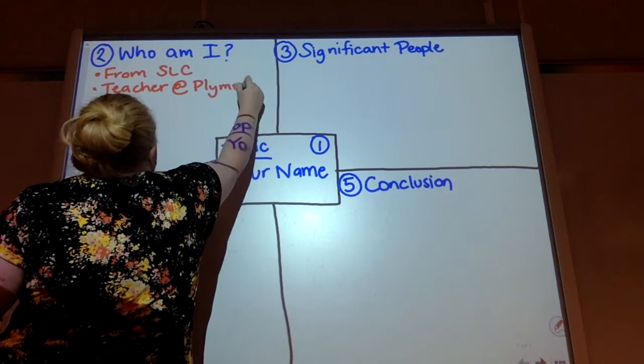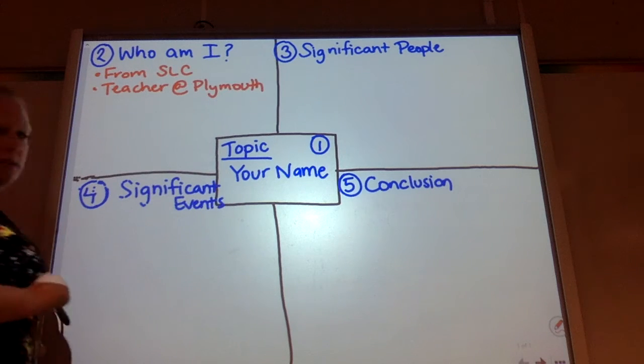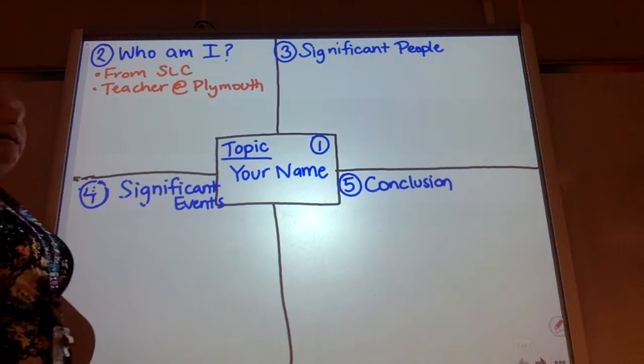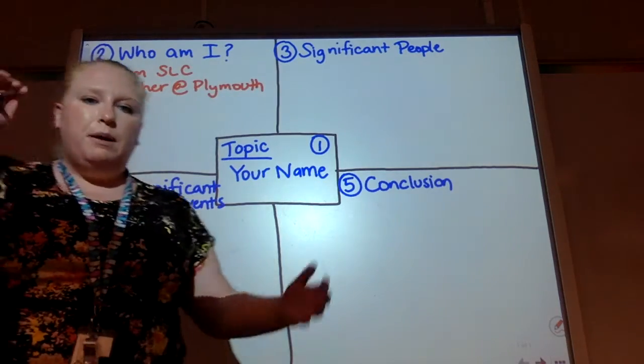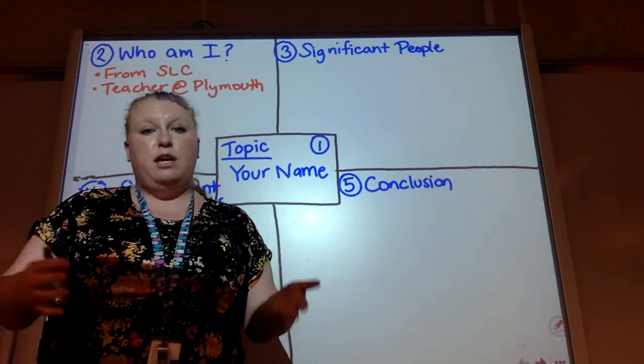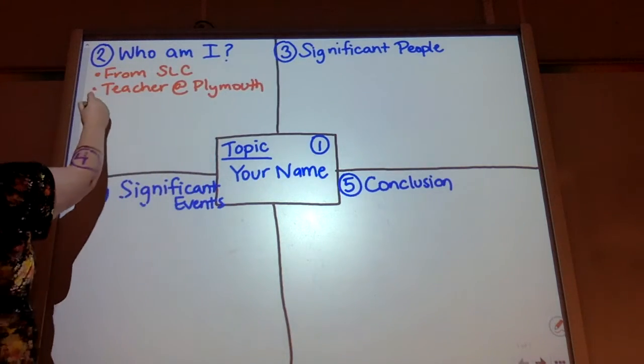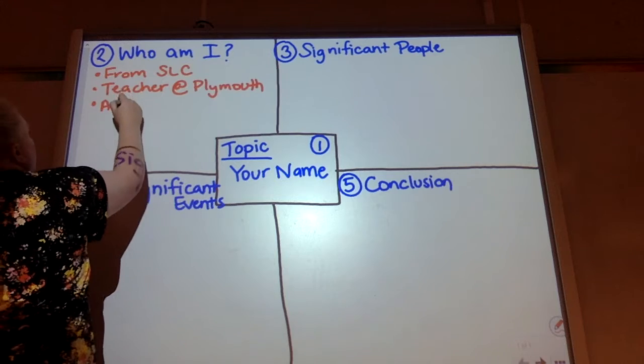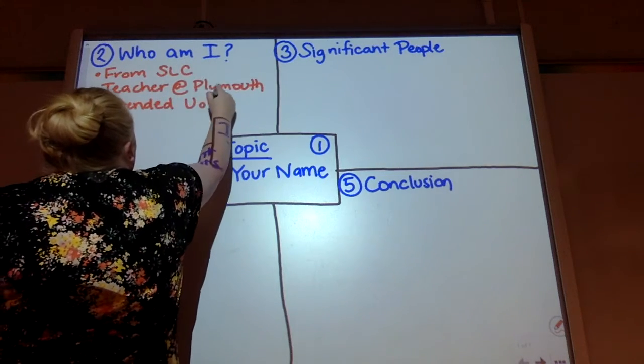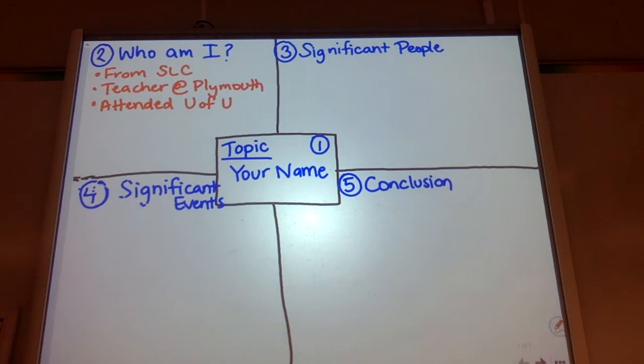Notice how I'm just jotting down details. I'm not writing full-on sentences, right? I attended the University of Utah. That's a big part of who I am. I went to a large university and got my degree for teaching. So I attended the U of U. I'm just going to put attended U of U. Go Utes, right?